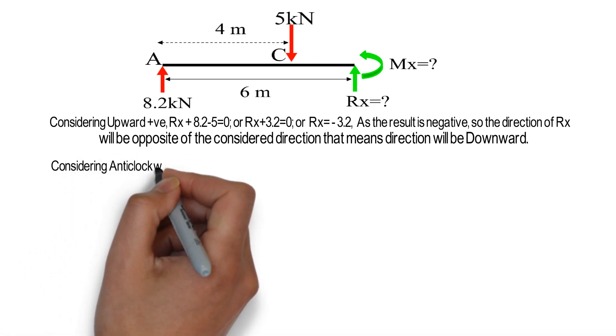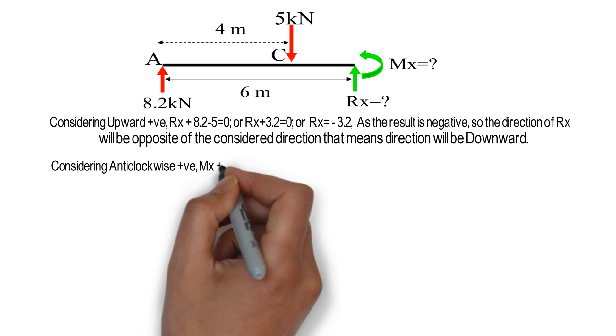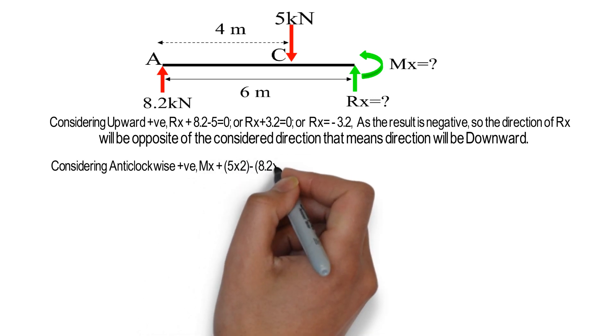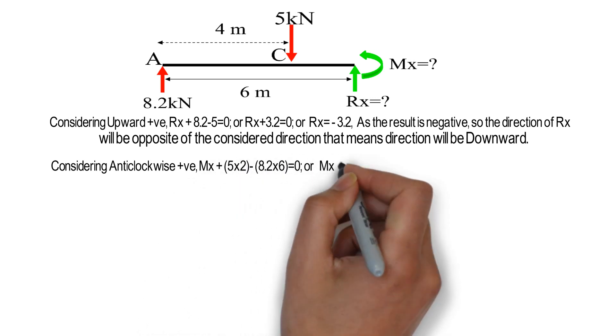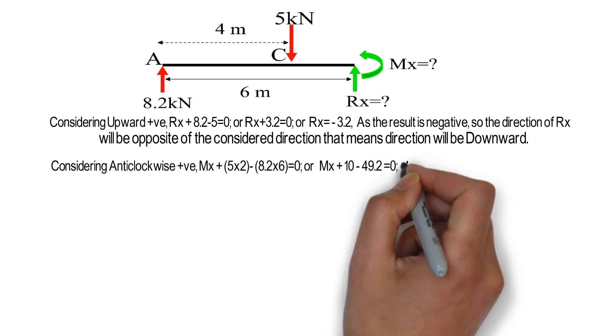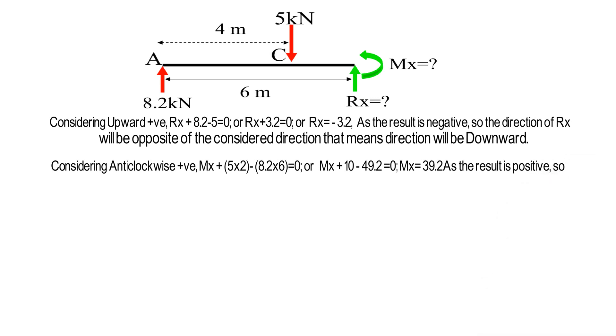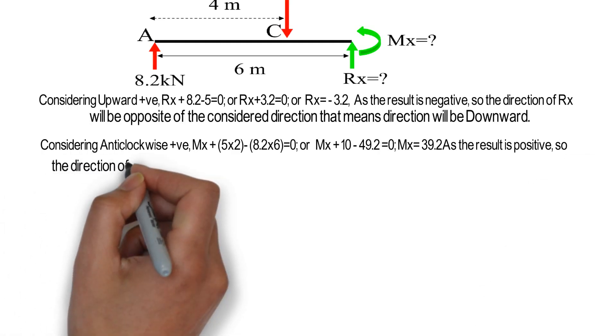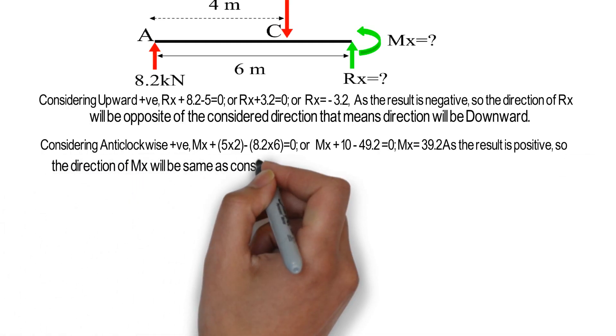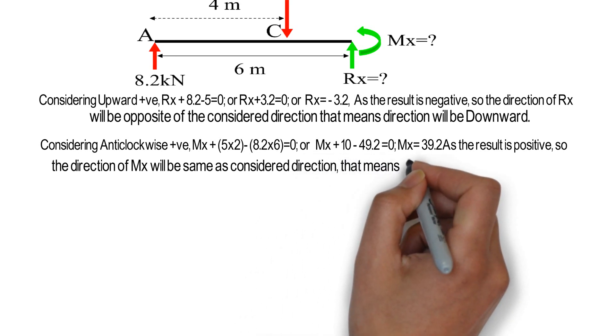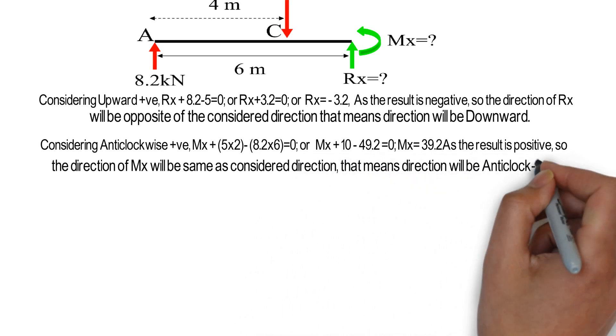Considering anti-clockwise positive, MX plus 5 into 2 minus 8.2 into 6 equals 0, or MX plus 10 minus 49.2 equals 0, so MX equals 39.2. As the result is positive, so the direction of MX will be same as considered direction. That means direction will be anti-clockwise.